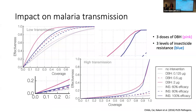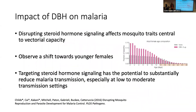To summarize, disrupting hormone signaling with DBH has many different effects on traits important for vectorial capacity. We see this ecological shift towards a younger mosquito population, which could have additional effects not examined here. It has the potential to substantially reduce malaria transmission, especially in lower or moderate transmission settings.